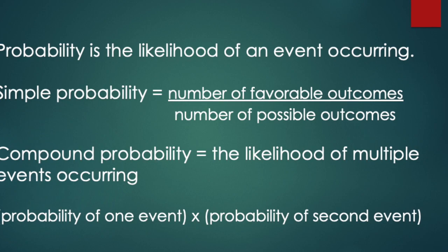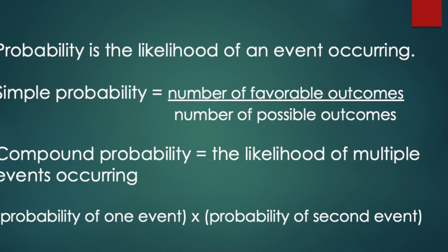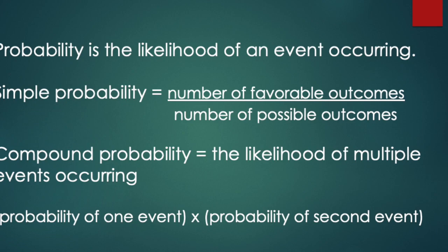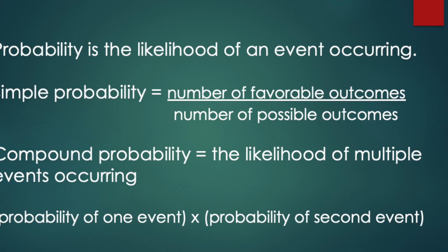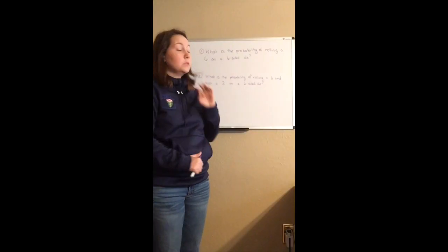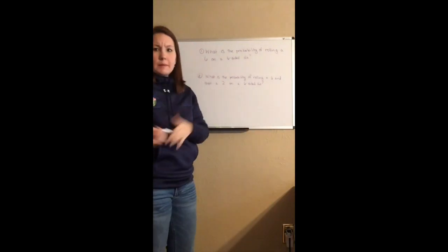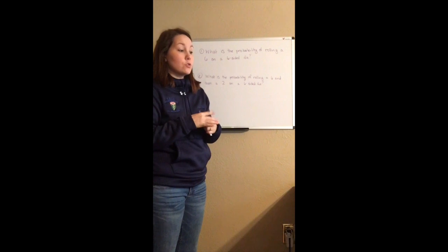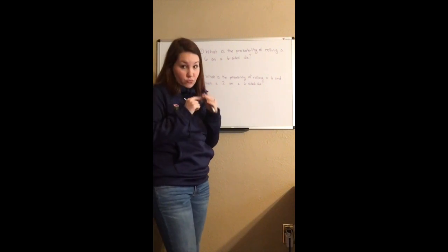Compound probability, on the other hand, is the likelihood of multiple events occurring — for example, drawing a queen, putting it back, and then drawing a king. Those are the key definitions, and now I'll give you some examples of what these look like.